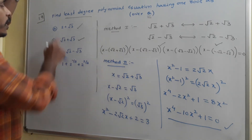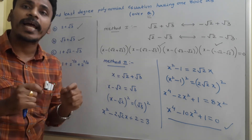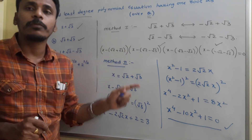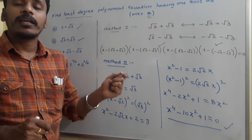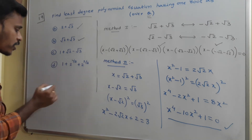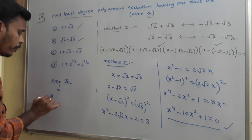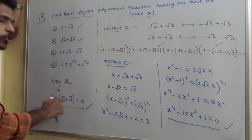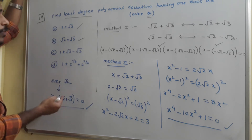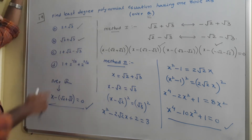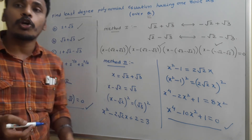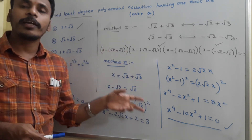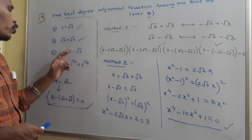Since the question is about finding the least degree polynomial over rational numbers, we need to proceed in such a way that the coefficients are rational. To make the coefficients rational, the least degree polynomial is of 4th degree. If the question were only asking for a polynomial over real numbers, the answer would simply be x minus (root 2 plus root 3) equals 0 — a first-degree polynomial with real coefficients. But since the question asks for a polynomial over rationals, we must do it this way. Method 2 is helpful for finding equations in all these cases.